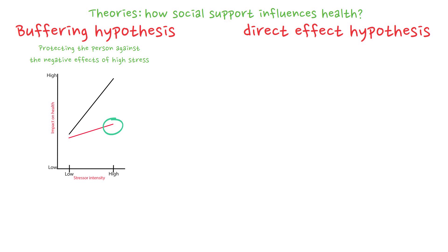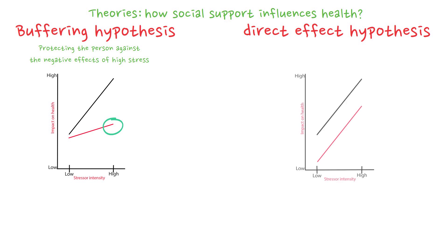The direct effect hypothesis, on the other hand, maintains that social support benefits health and well-being regardless of the amount of stress people experience. As you can see on this second graph, the beneficial effects are similar under high and low stressors.